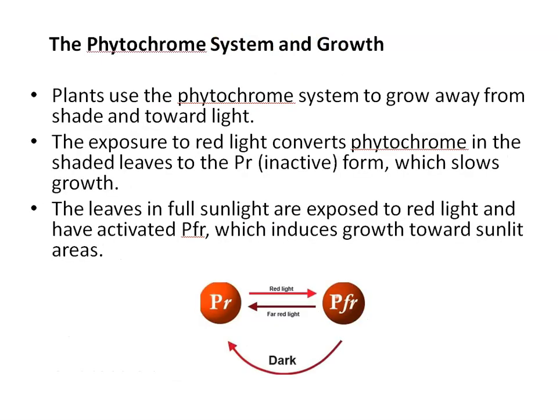Phytochrome system and growth: Plants use the phytochrome system to grow away from shade and toward light. Exposure to red light converts phytochrome in shaded leaves to the inactive PR form, which slows growth. Leaves in full sunlight are exposed to red light and have activated PFR, which induces growth toward sunlight areas.